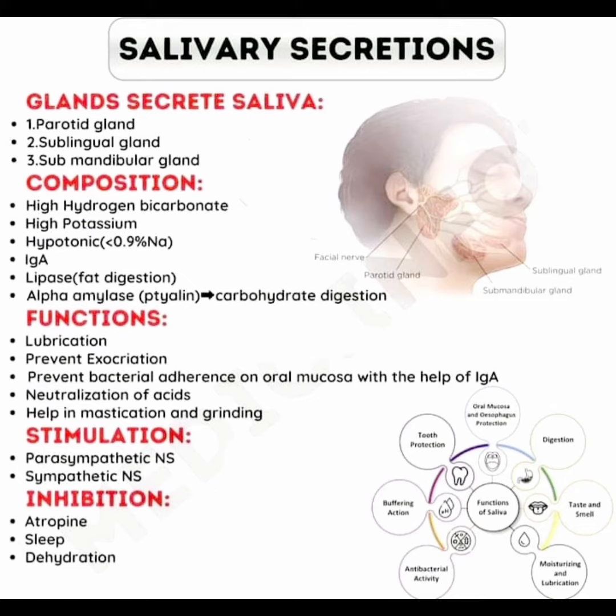Inhibition of saliva is caused by atropine, sleep, and dehydration. So this is salivary secretions. The glands that mainly secrete saliva are the parotid gland, sublingual gland, and submandibular gland. Look at the image for the location and dimensions of the glands.